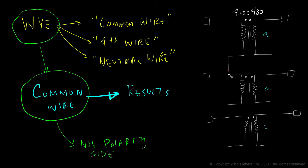We're going to take a wire and connect the non-polarity side of winding A to winding B and the non-polarity side of winding B to winding C. So all the non-polarity side of winding A, B, and C are connected together. And this wire, we'll refer to as a common wire or a neutral wire or a fourth wire. The primary windings are connected in the Y connection.